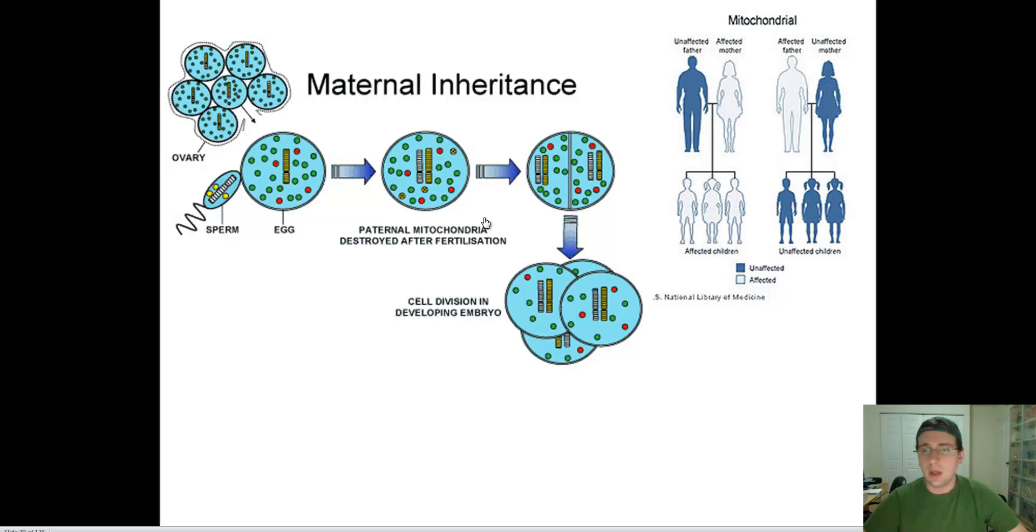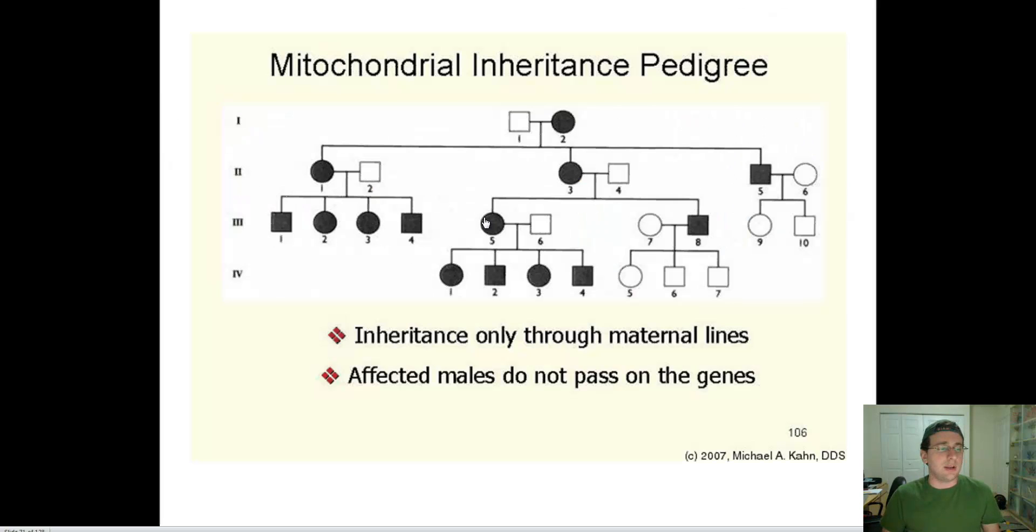And you can recognize a pedigree like this because when you see one, you will see the strange pattern where only what the mothers do determine what the children are like. And we just talked about this. Affected males do not pass on the genes because the genes are coming from the mitochondria.